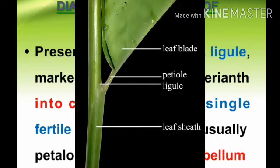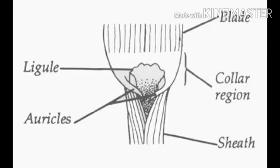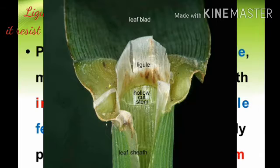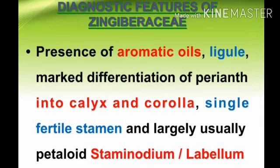Ligules are narrow, thin, strap-shaped or finger-shaped membranous scales on the inner side of the leaf sheath, or they may be found between the leaf sheath and the leaf lamina. That particular membranous structure is called the ligule, which is a characteristic feature of this family.